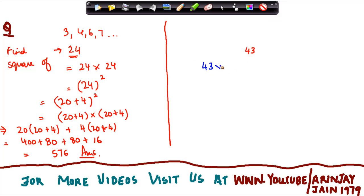This says 43 into 43, or 40 plus 3. The idea is to put this as close to a 0 as possible. 40 plus 3 square can also be written as 40 plus 3 into 40 plus 3.